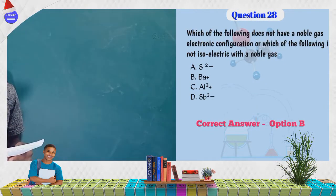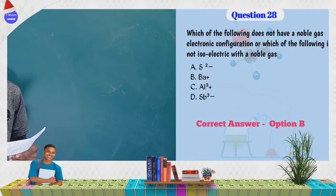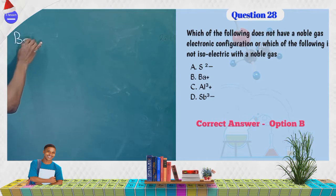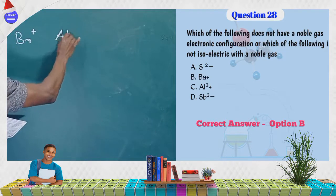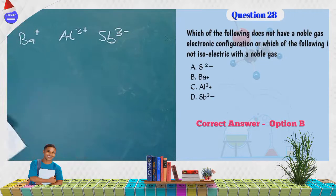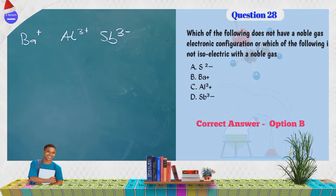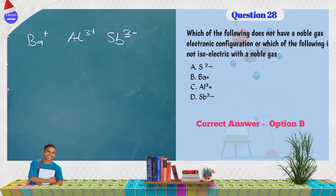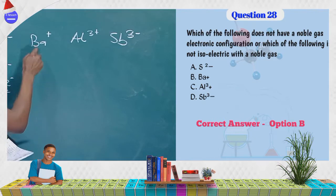The next question asks which of the following does not have a noble gas electronic configuration — or is not isoelectronic with a noble gas. The options are S²⁻, Ba⁺, Al³⁺, and Sb³⁻. Sulfur is group 6; gaining 2 electrons gives it 8 electrons in the outermost shell — noble gas configuration.